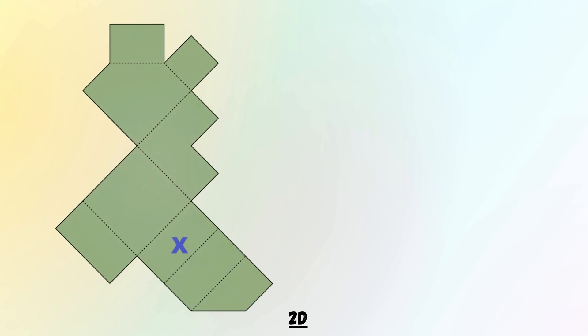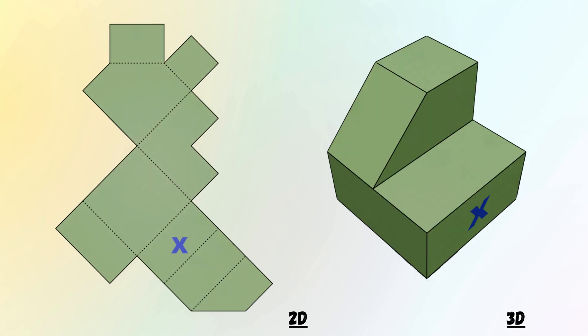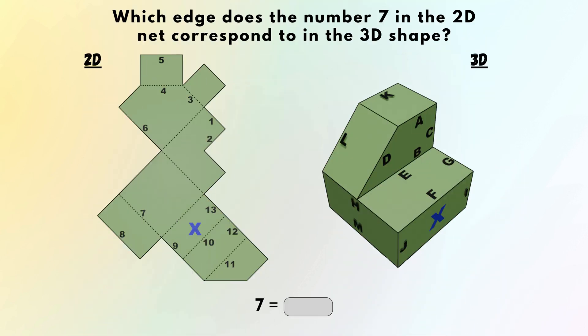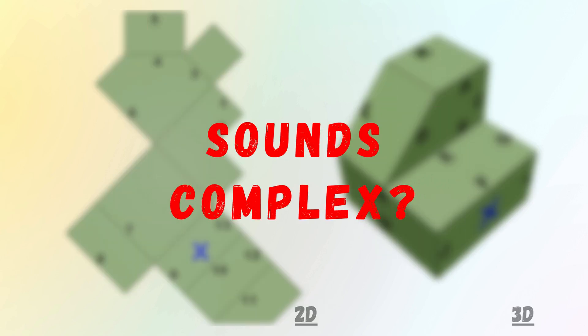You're shown a simple 2D net. Beside it, there's a 3D shape which is supposed to be the folded version of the 2D net. Here is what you are asked. Which edge does the number 7 in the 2D net correspond to in the 3D shape? Sounds complex, right?